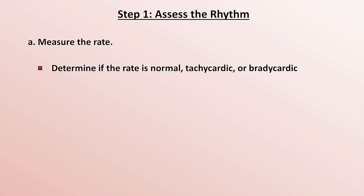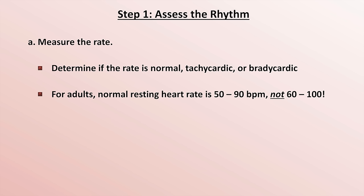For adults, the normal resting heart rate is 50 to 90 beats per minute, and not 60 to 100. The fact that most people think it's 60 to 100 is very frustrating and can be detrimental. For example, I've seen patients referred to cardiologists for asymptomatic heart rates in the 50s, which is completely unnecessary. One of the four criteria for the Systemic Inflammatory Response Syndrome, or SIRS, is a heart rate greater than 90, which would be a strange criteria if heart rates in the 90s were normal.